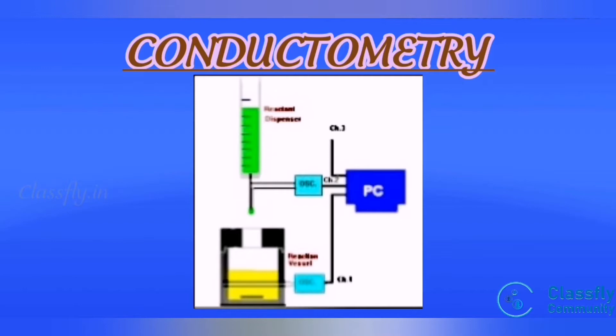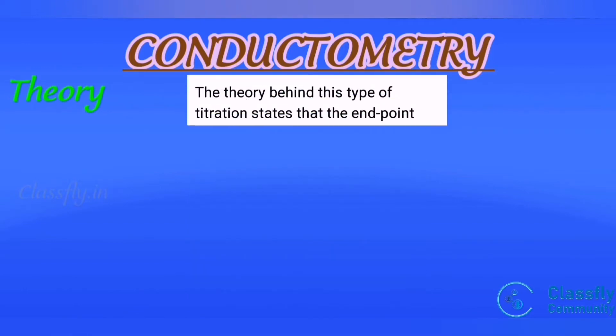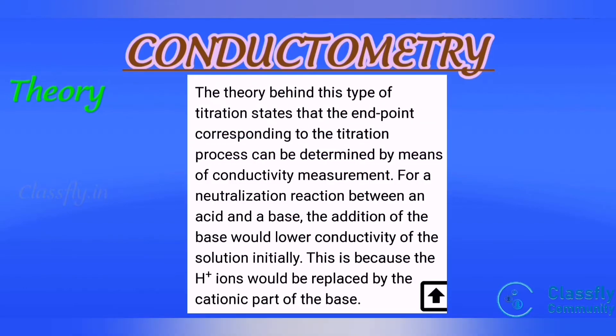Theory: The theory behind this type of titration states that the endpoint corresponding to the titration process can be determined by means of conductivity measurement. For a neutralization reaction between an acid and base, the addition of a base would lower conductivity of the solution initially. This is because the H+ ion would be replaced by the cationic part of the base.